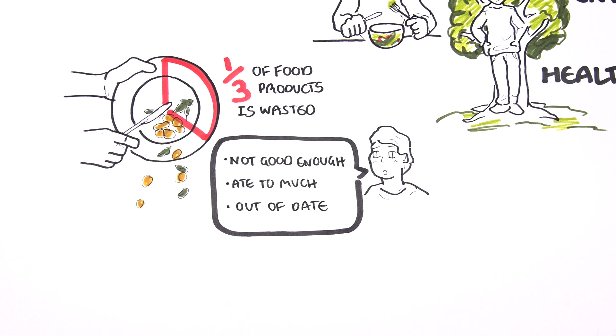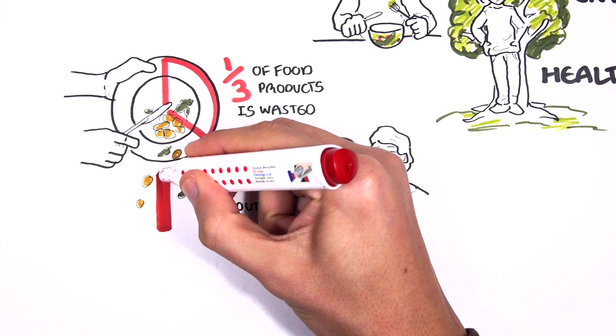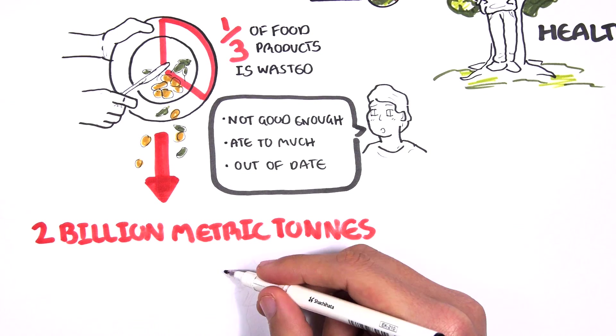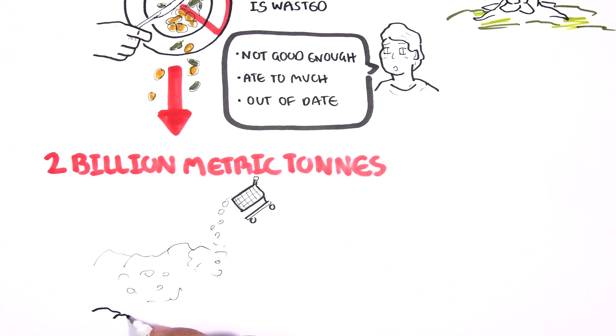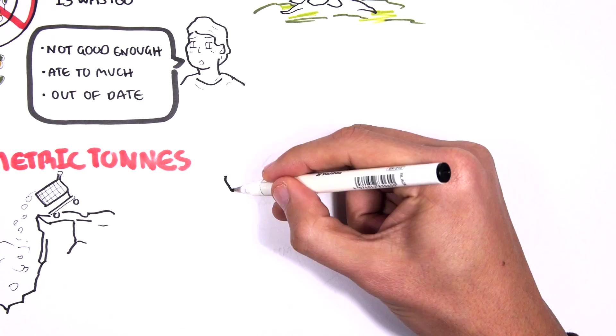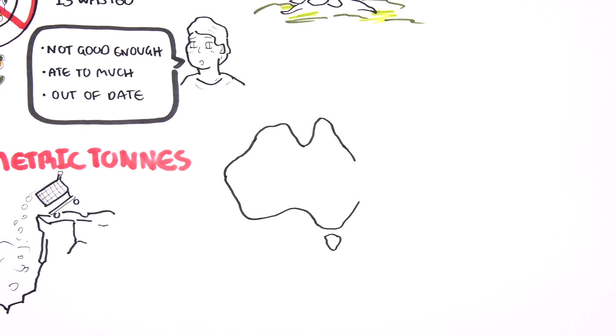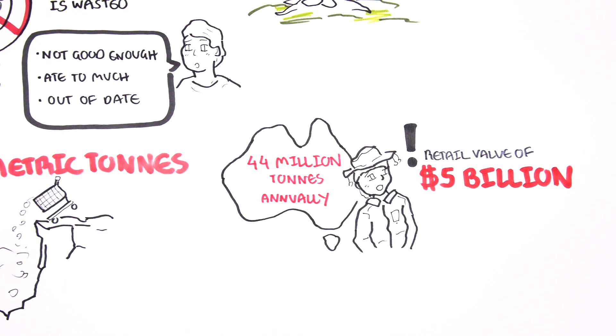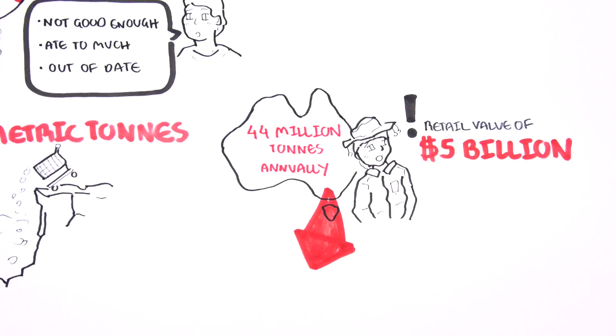So one-third of food is wasted. This means 2 billion metric tons thrown away every year. In Australia, 44 million tons of food are wasted annually. Why is this important? 44 million tons of food wasted annually equates to a retail value of $5 billion in Australia.